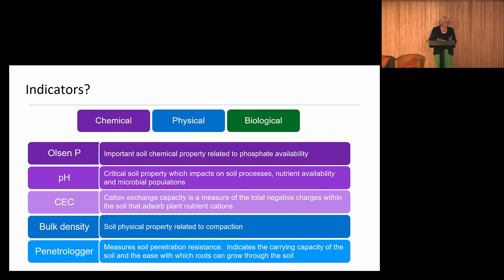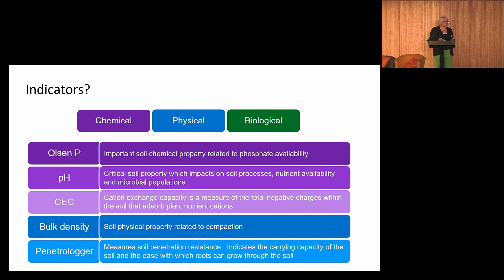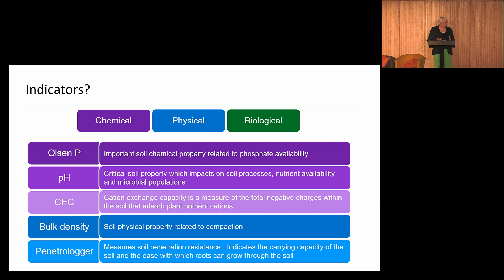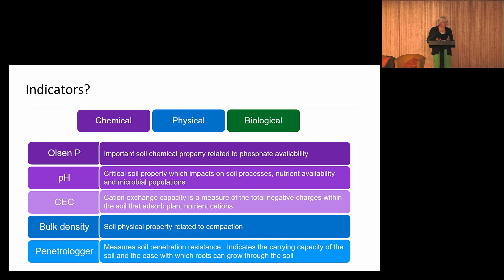pH is really critical and impacts on soil processes, nutrient availability and also microbial populations — and in Northern Ireland there's still work to do in optimising pH across the landscape. Cation exchange capacity indicates the ability of a soil to release nutrients for plant growth, and in terms of physical measurements we have bulk density, which is related to compaction.